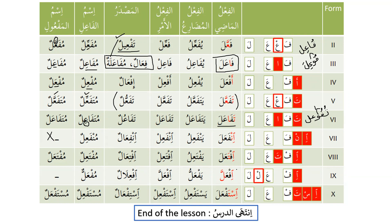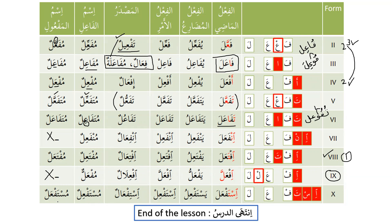Form 9: if'alla yaf'allu, masdar if'ilalun, muf'allun — this form does not have a passive or ism al-maf'ul. Form 10, which we discussed in detail today: istaf'ala yastaf'ilu, fi'l al-amr istaf'il, masdar istif'alun, mustaf'ilun and mustaf'alun. Alhamdulillah, we have now completed all 10 forms.